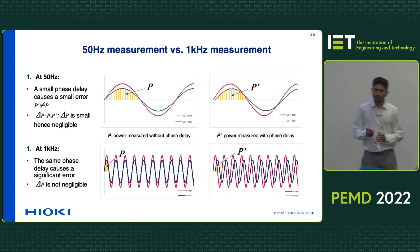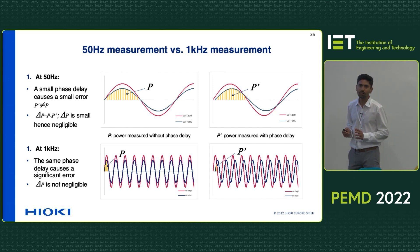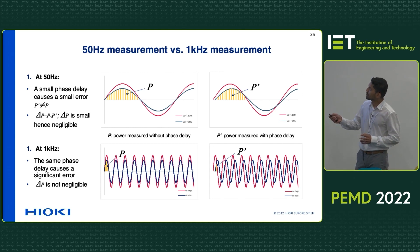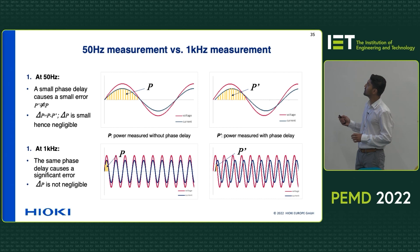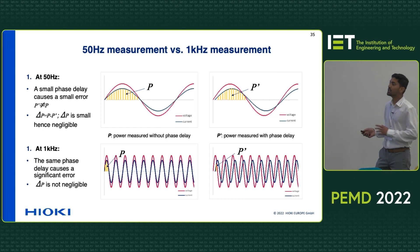Let's consider the most basic 50 hertz sinusoidal waveform, where we are measuring a resistance, and therefore there is no delay in the current. What we are seeing here is a voltage and a current waveform — they are in phase with each other. But due to some reason, there is an error in the measurement, and the current waveform that we are measuring is a little bit delayed.